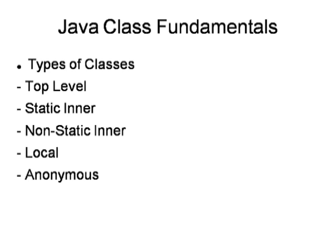There are different types of Java classes. The first one is top-level. The second is static inner — for which we do not have to make any instantiation. Another one is non-static inner. There is also local class, which is simple. And anonymous class is also one type. These are the basic types of classes in Java.